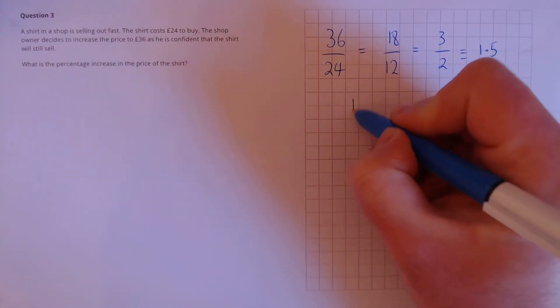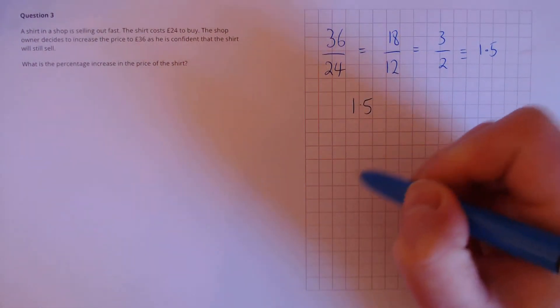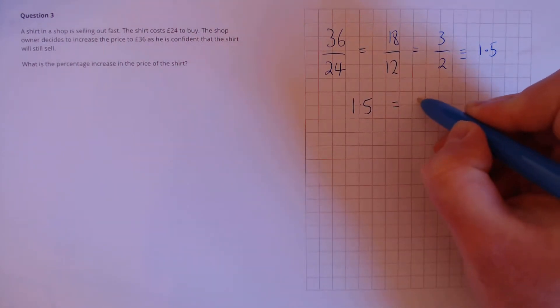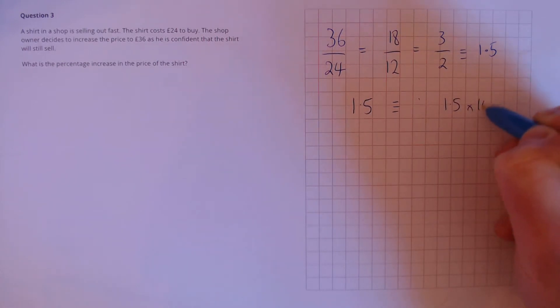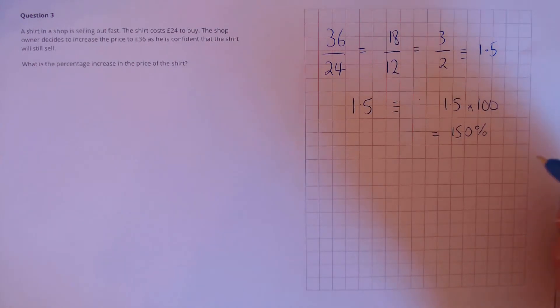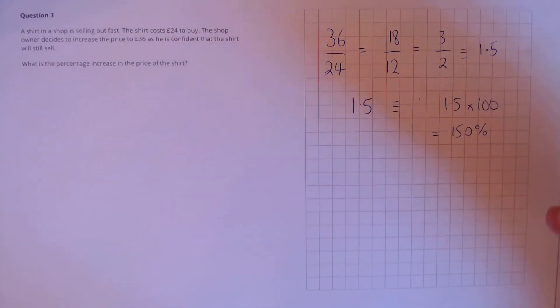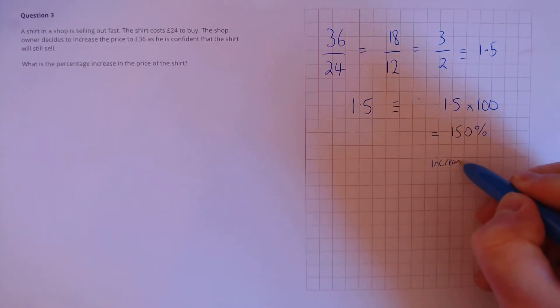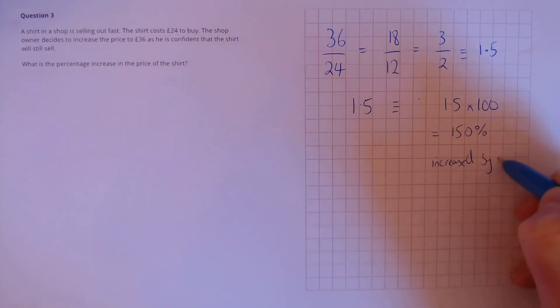So we need to figure out what 1.5 is as a percent. To do that we need to multiply by 100, which is 150%. If we originally start off with 100% then this has increased by 50%.